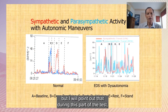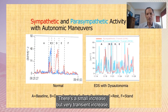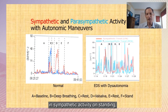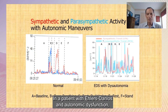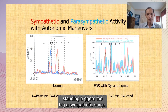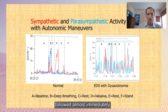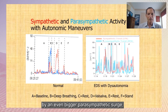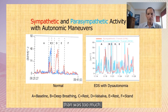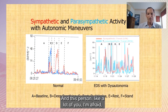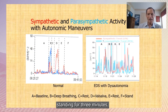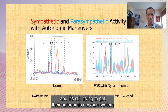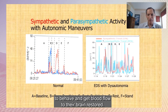During this test, the patient is asked to stand. Red is sympathetic, blue is parasympathetic. There's a small, transient increase in sympathetic activity on standing, then the body does other things to maintain blood flow to the brain. In a patient with Ehlers-Danlos and autonomic dysfunction, standing triggers too big a sympathetic surge, followed almost immediately by an even bigger parasympathetic surge — too much gas, too much brake — and this person has been standing for three minutes and is still trying to get their autonomic nervous system to restore blood flow to the brain.